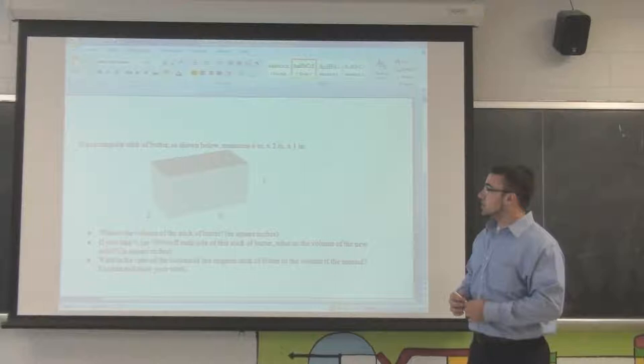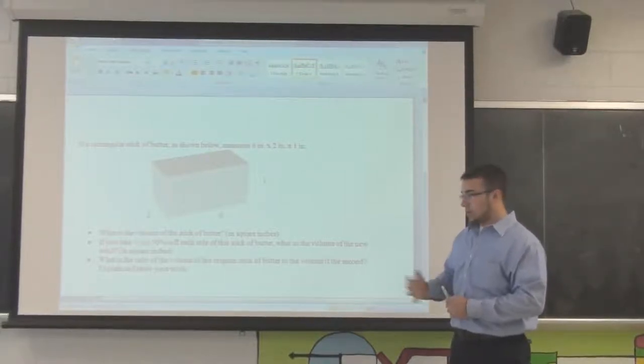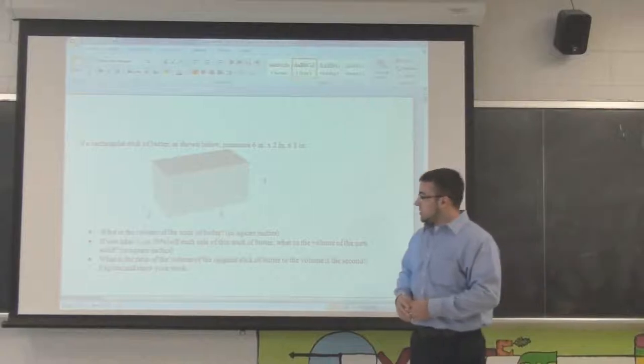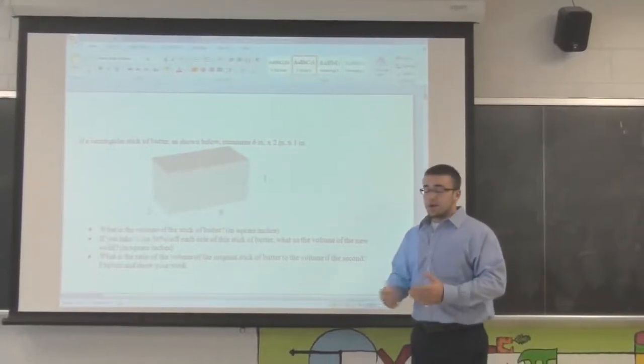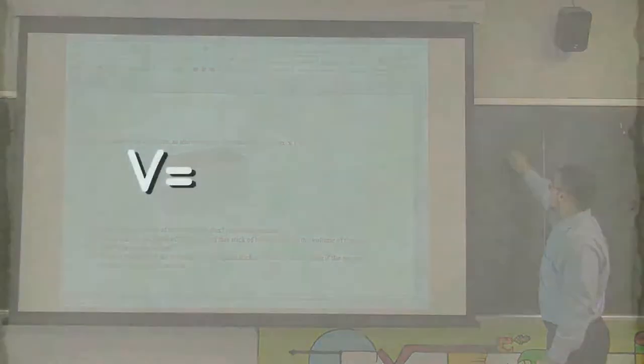If a rectangular stick of butter, as shown below, measures six inches by two inches by one inch, we have three separate bullets. What is the volume of the stick of butter? You will have a formula sheet on your HESPA. Volume is length times width times height, so let's look at this first bullet.